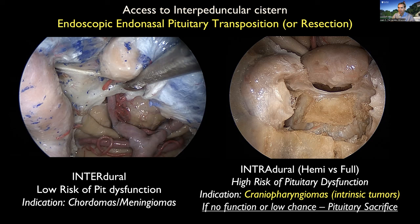When we perform full transposition, there is a high risk of pituitary dysfunction. To the point where I think there is very low chance of preserving pituitary gland function or stock integrity with resection, I might consider removing the pituitary gland entirely, as I'll show in some cases. This adds benefits such as better exposure of the retrosellar space and into the hypothalamic region.